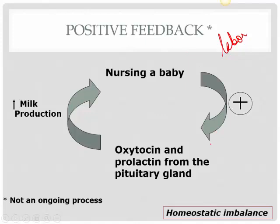Let's look at the example of a woman nursing her baby. When the baby suckles, it stimulates oxytocin and prolactin from the pituitary gland. Both go to the breast tissue, increasing milk production and ejection. The more milk she produces, the more the baby nurses; the more the baby nurses, the more these two hormones are produced and the more milk she produces — a loop that goes on until she weans her baby. This is positive feedback. Unlike negative feedback, which occurs every day, positive feedback only occurs sometimes and is not an ongoing process.